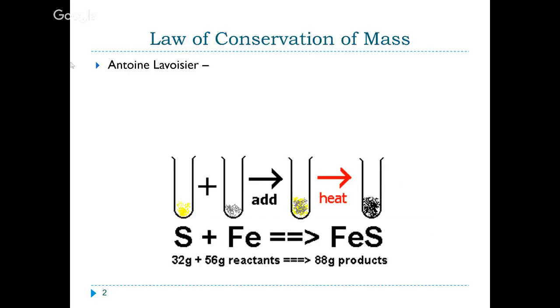Let's revisit the law of conservation of mass, which states simply that matter cannot be created or destroyed in a chemical reaction. Antoine Lavoisier is basically considered to be the man of modern chemistry, moving us out of the realm of alchemy. Here we're showing the reaction between sulfur and iron to form iron sulfide. If we start with 32 grams of sulfur reacting with 56 grams of iron, we have to end up with 88 grams of products. Or if the reaction wasn't complete, products plus whatever remaining reactants still have to equal the mass that you started with.